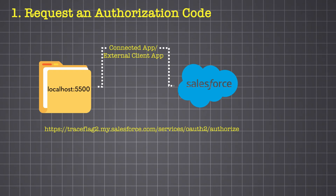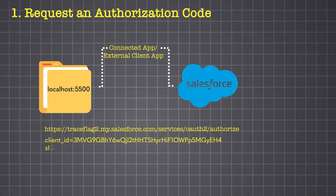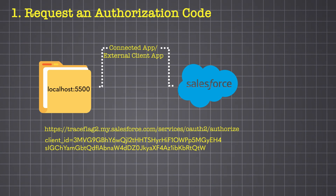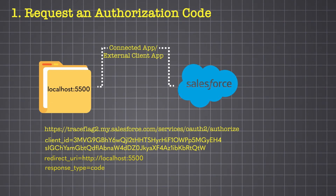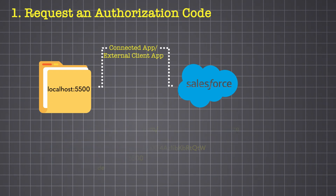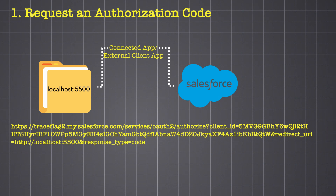Now let's add the external client app details to the authorization endpoint as URL parameters. We pass the client ID, which is the consumer key of the app, followed by the redirect URI — the callback URL that must match the one configured in the external client app. Finally, we include the response type, which specifies the OAuth 2.0 grant type. Since we are requesting an authorization code, we set this to 'code'. Let's combine all our parameters to get our final authorization endpoint.